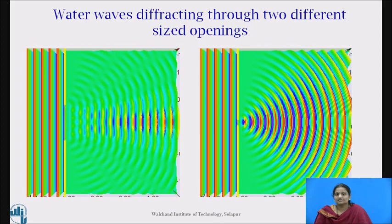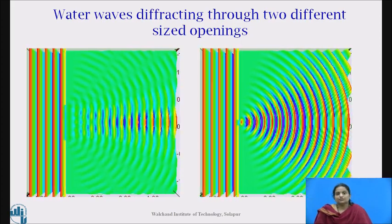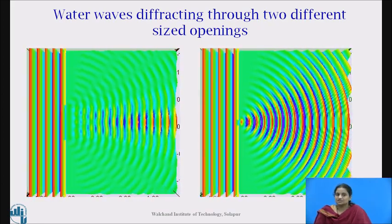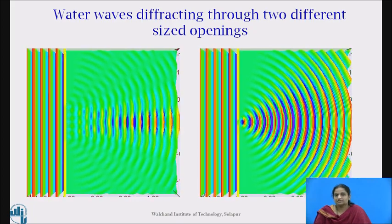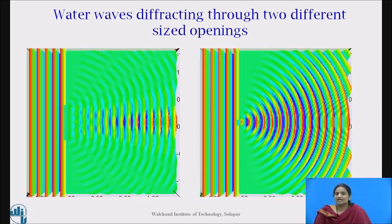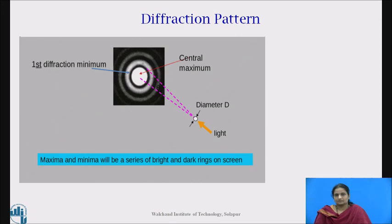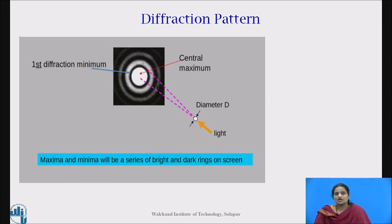We can see here the water waves diffracting through two different sized openings. Diffraction effects are small when the slit is much larger than the incident wavelength (lambda). The waves are diffracted more through the narrower opening when the wavelength is larger than the opening. Now let us see what a diffraction pattern is. A diffraction pattern is the alternate bright and dark bands observed during the diffraction phenomena. The bright central portion is known as the central maximum, and it is bounded on either side by a series of secondary maxima and dark bands which are called minima.